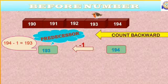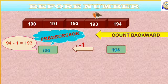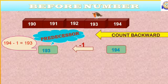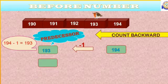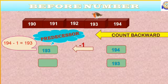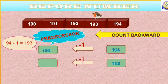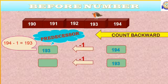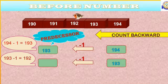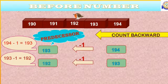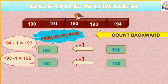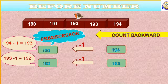So, predecessor of 194 is 193. Let's take one more number. That is 193. What comes before 193? 193 minus 1 equal to 192. So, predecessor of 193 is 192.